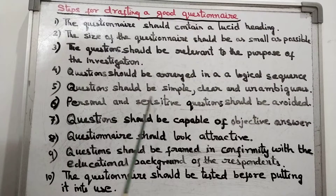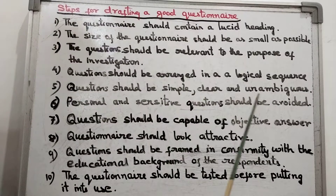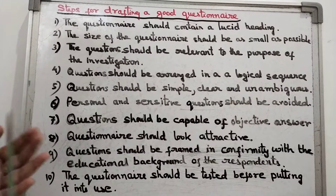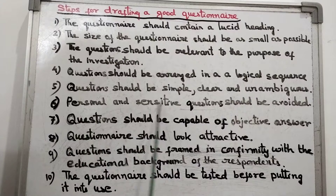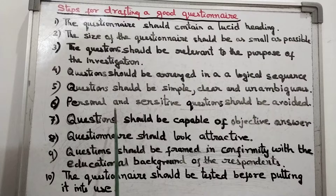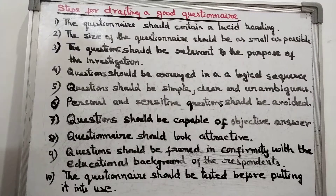The fifth point is that questions should be simple, clear, and unambiguous — no mistakes, no unnecessary things included, and the question should be clear-cut. The sixth point is that personal and sensitive questions should be avoided. We should not include personal or sensitive questions in our questionnaire, because there may be a chance of getting wrong answers.